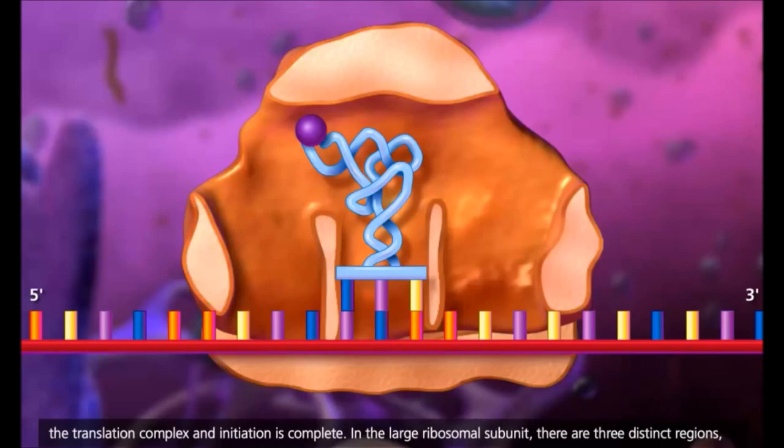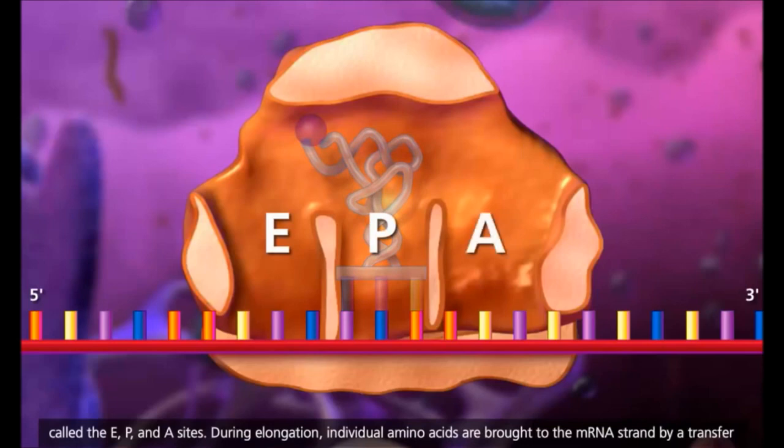In the large ribosomal subunit, there are three distinct regions called the E, P, and A sites.